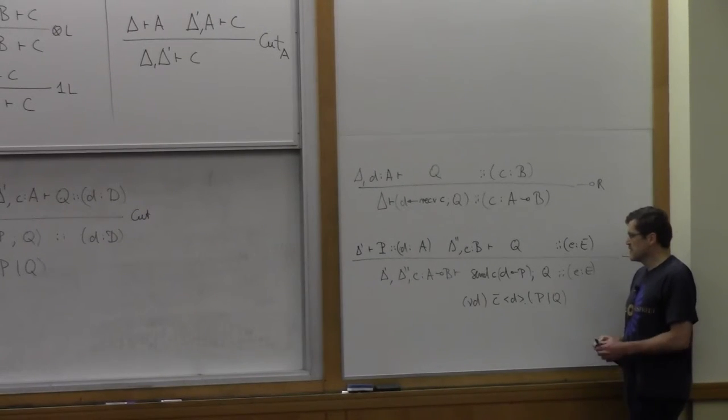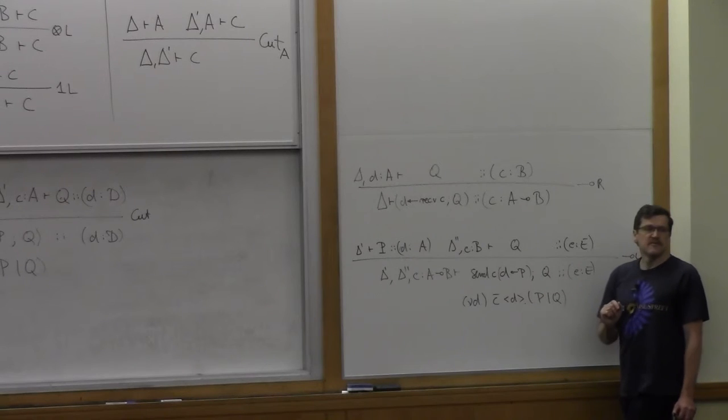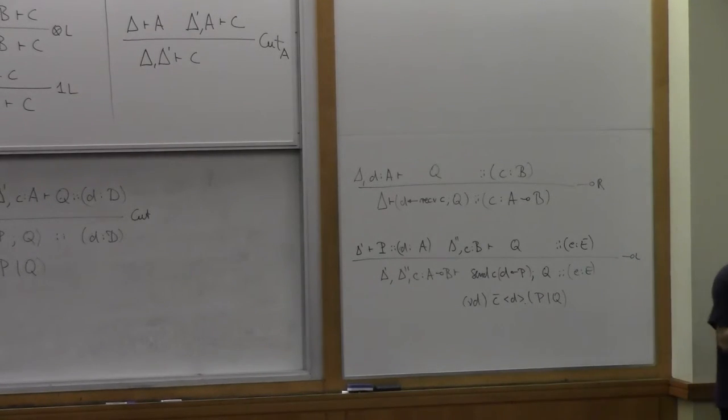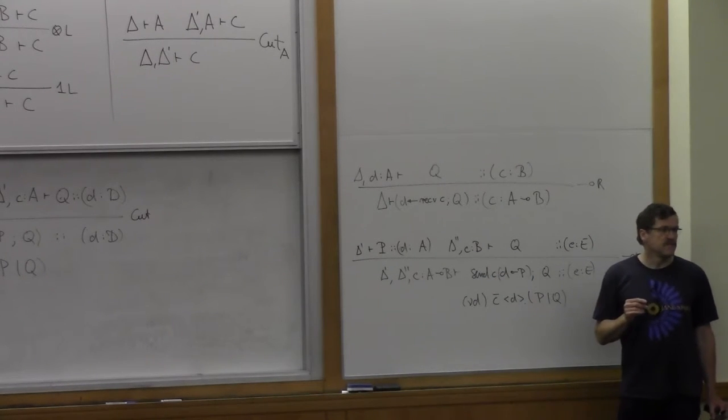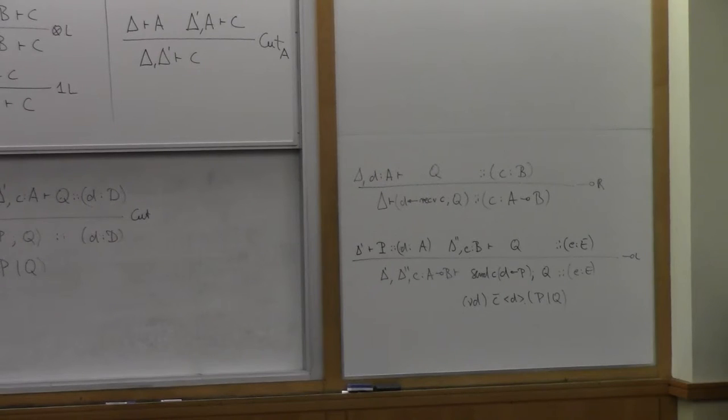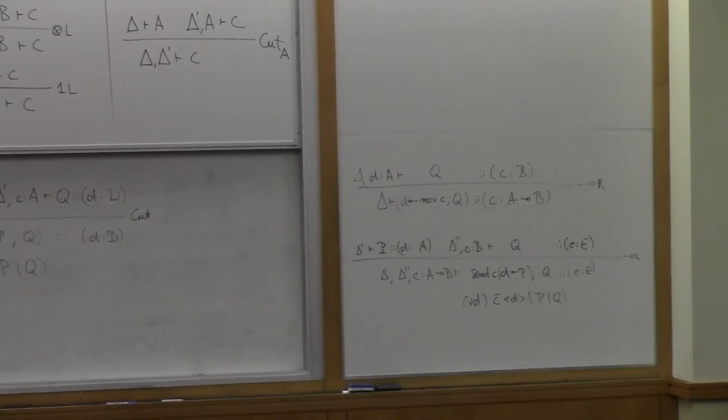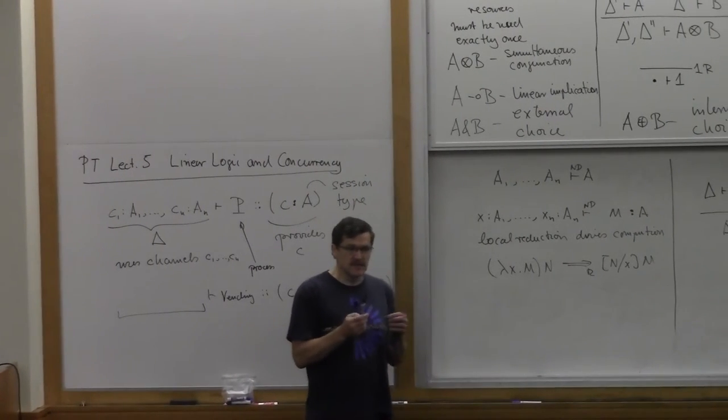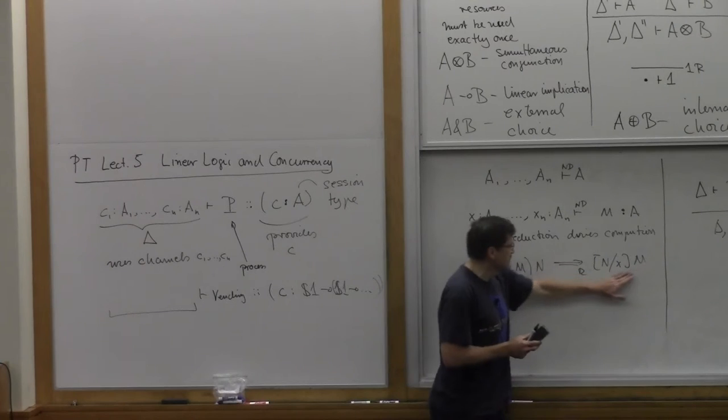So in the pi calculus what would this be? So we create a new channel D and we send along C the channel D and then we execute P and Q in parallel. We create a fresh channel D which nobody else knows about except P and P provides that for us. We send that along C and then P and Q continue in parallel afterwards.